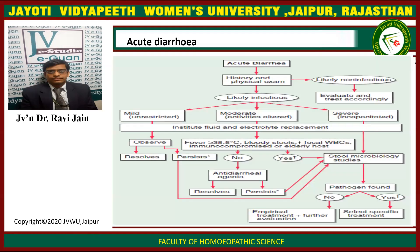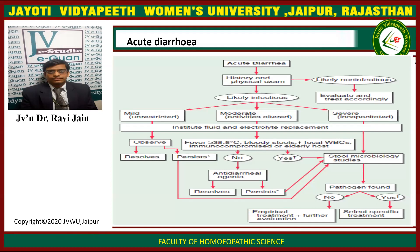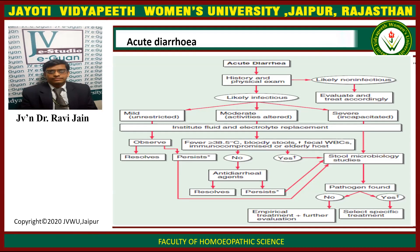This is the flowchart of acute diarrhea. We have to take the history and physical examination. If it is non-infectious, then we treat accordingly. If it is likely to be infectious, it depends on three factors: the diarrhea is either mild, moderate, or severe — causing incapacitating activities. In all three cases, fluid and electrolyte replacement has to be instituted.